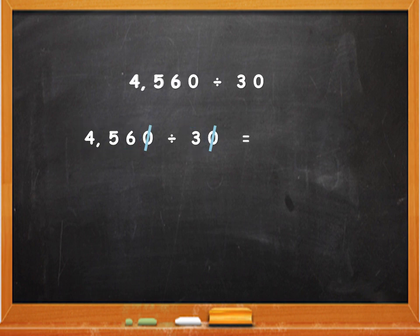We will do linear division. So put an equal to sign and divide the first digit 4 by 3. 3 will go once. 3 once are 3 and the remainder is 1. Carry over 1 and divide 15 by 3. 3 will go 5 times. The remainder is 0.